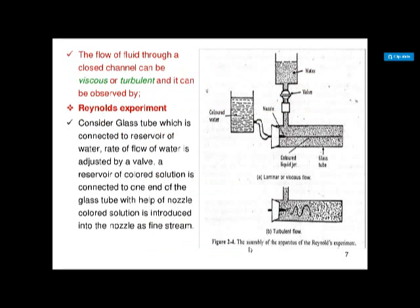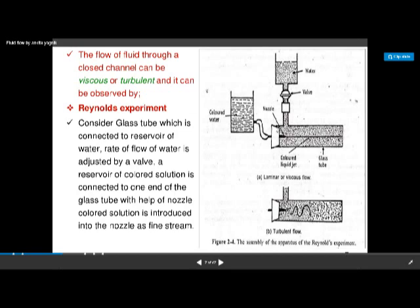Osborne Reynolds was a scientist who performed one experiment to study the flow of fluid. He took a glass tube connected to a reservoir containing water, and there is a valve. When we open this valve, water enters into the glass tube. One end of this glass tube is connected to another reservoir which contains a colored solution or dye solution.